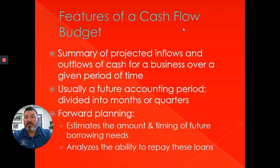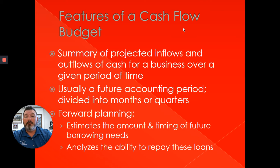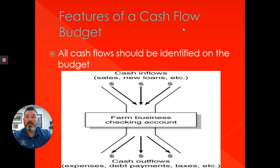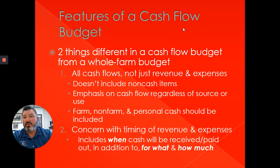It's a future accounting period — it doesn't do much good to do a cash flow budget on something that's already occurred; that's a past history study. You're going to project out for a quarter or maybe a year to do some forward planning — estimate the amount and timing of cash coming in and out and your potential borrowing needs. Here's a diagram your textbook supplies showing cash inflows into your checking account and then cash outflows. The last thing you want to do is say, 'Where did my cash go?' instead of giving it an assignment.